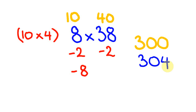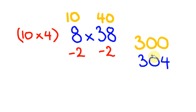It might seem a little confusing, but none of the actual parts were that hard — it's just remembering the order. First we got the 10 times 4 part; we took the differences away; we multiplied the two differences to get the third number; and then multiplied by 10 to get 300, then added the last part. You'll get faster and faster doing this.